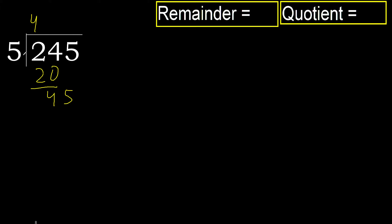45. 5 multiplied by 9 is 45, which is not greater. 45 minus 45 is 0. There is no next number, therefore finish.